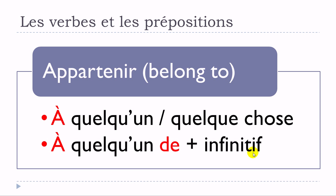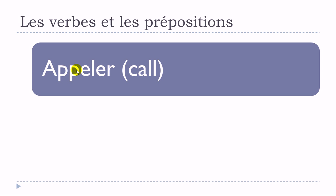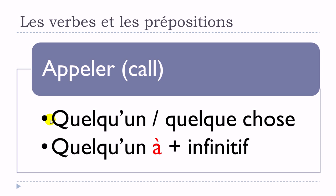Deuxième verbe: appeler. First structure — no preposition: appeler quelqu'un or appeler quelque chose. Second structure — no preposition: appeler quelqu'un, then the verb at the infinitive form: appeler quelqu'un à plus infinitif.